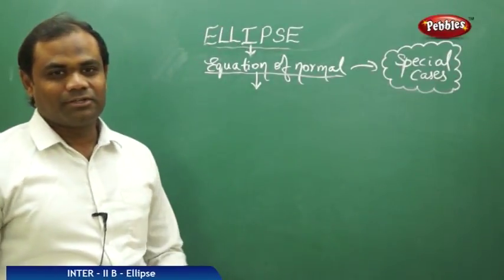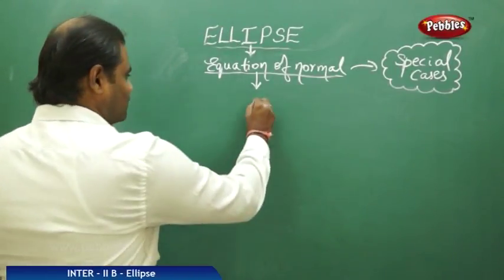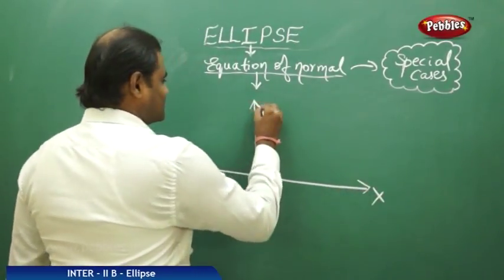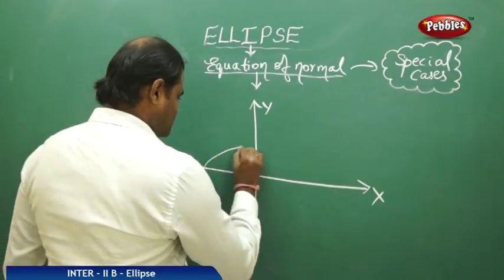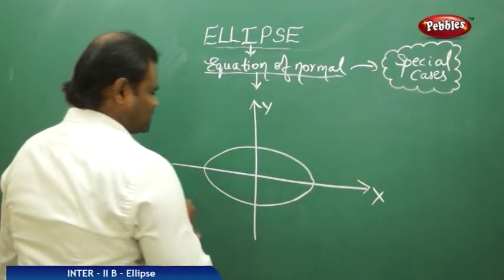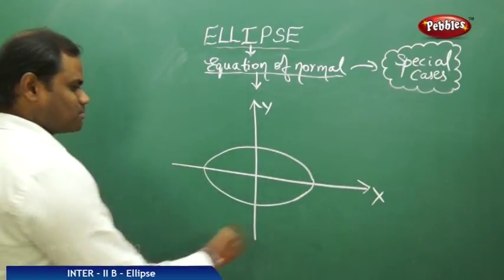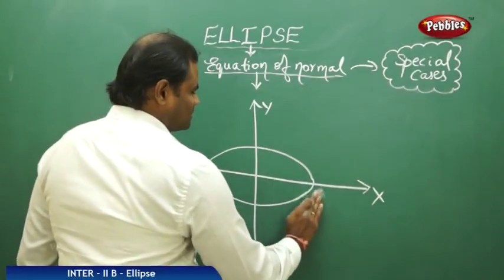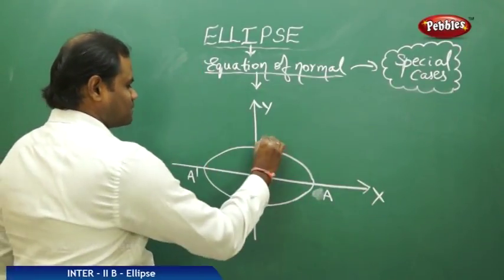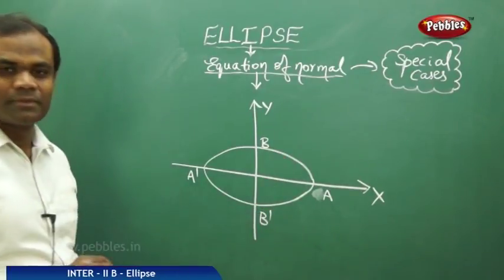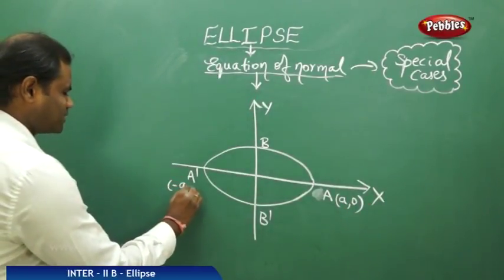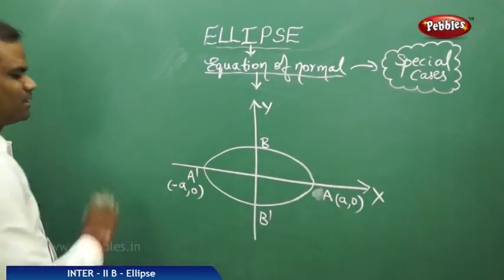Next, we see the equation of ellipse. First let's draw the standard ellipse — the x-axis, y-axis, and the ellipse. Now for this ellipse, we know that the extremities are a, a dash, b, and b dash. We know that the coordinates of a are (a, 0) and the coordinates of a dash are (−a, 0).